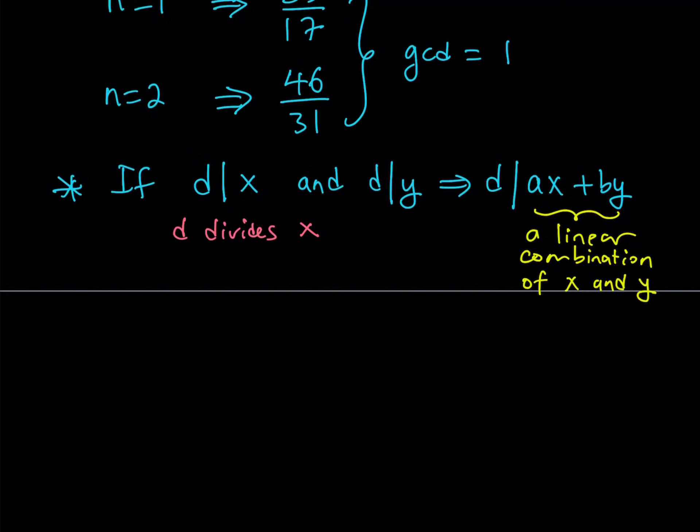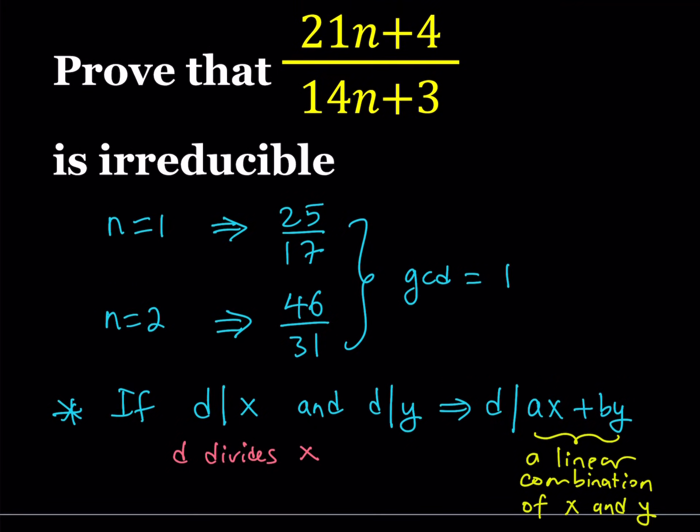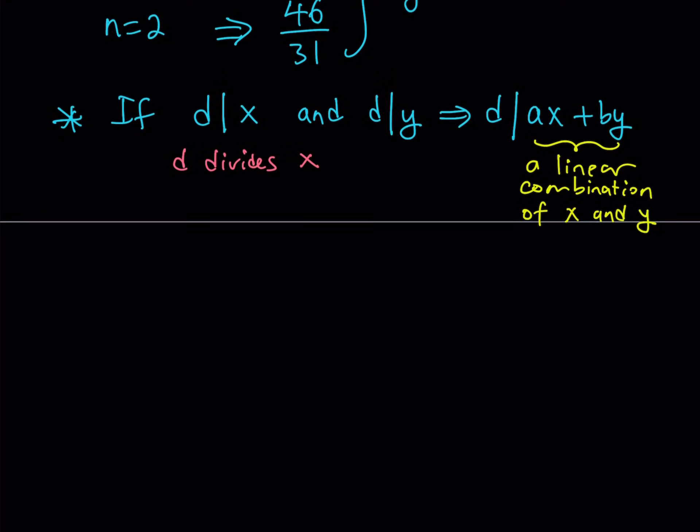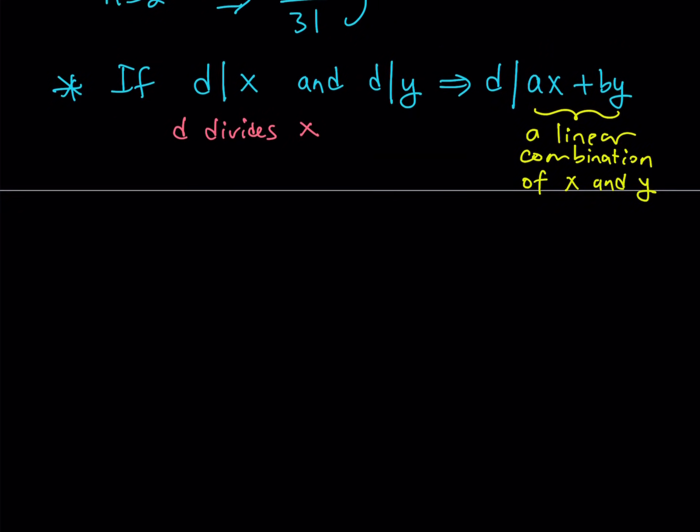Now let's see how we can use this property in our example and see how we can prove that this fraction is irreducible. And again, proving this fraction irreducible means that the numerator and the denominator have no common divisors besides one. In other words, we're going to prove that the gcd of the numerator and the denominator is one.